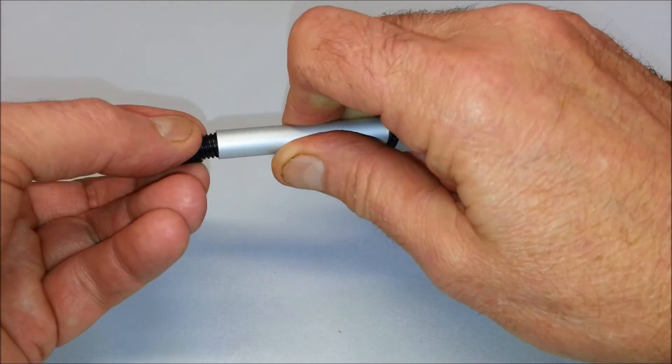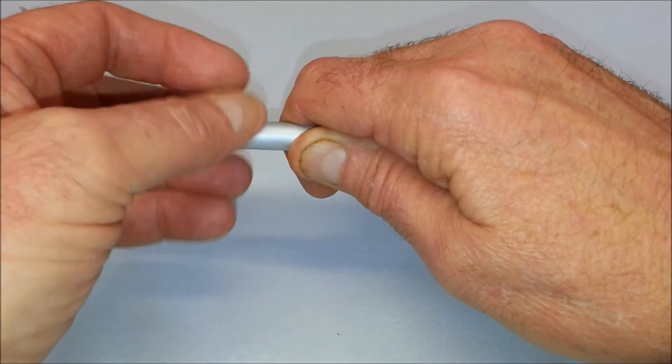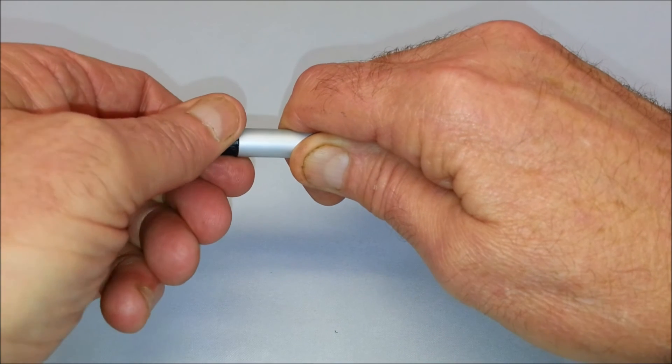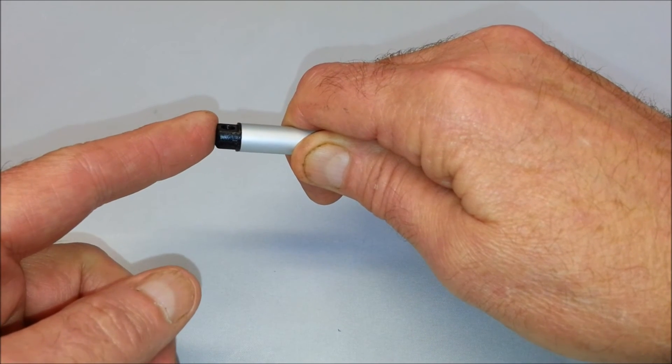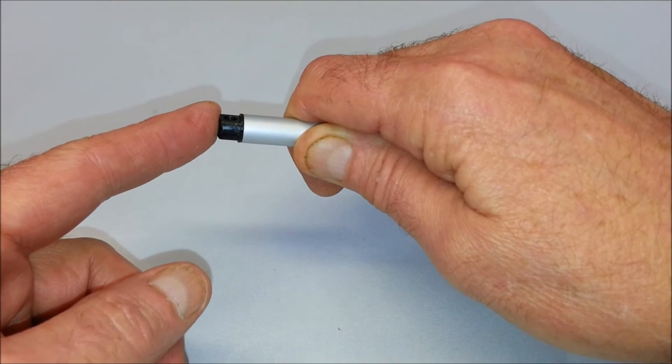Insert your new rod tip and while still grasping the actuator shaft firmly, tighten it clockwise finger tight. The maximum torque rating for tightening is 7 pounds so if you don't have a torque driver, finger tight is best to avoid damaging the drive nut.